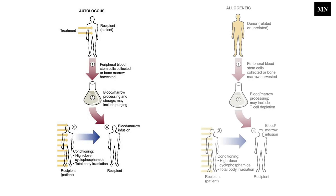Allogenic stem cell transplantation involves transferring the stem cells from a healthy person to the patient's body after high-intensity chemotherapy or radiation. The donated stem cells can come from either a related or an unrelated donor.